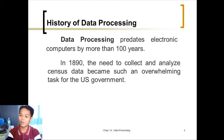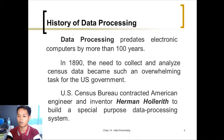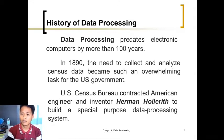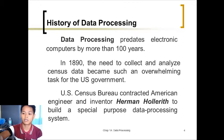In 1890, the need to collect and analyze census data became such an overwhelming task for the U.S. government that the U.S. Census Bureau contracted American engineer and inventor Herman Hollerith to build a special purpose data processing system. At that time, the U.S. had a problem counting their population. The Census Bureau contracted Herman Hollerith, who created a device that solved the U.S. problem.